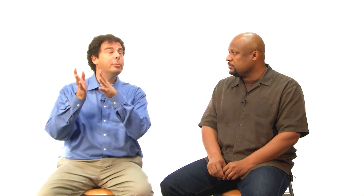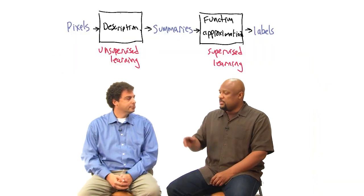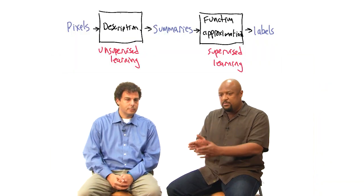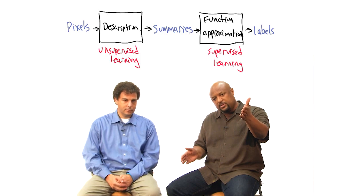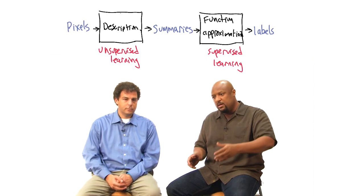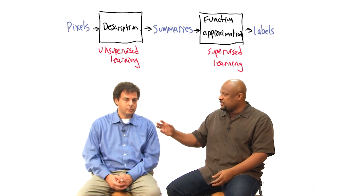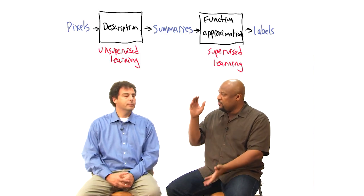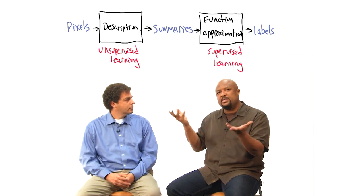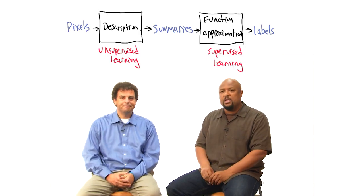But I could see ways that unsupervised learning could be helpful in the supervised setting. If I do get a nice description, and it's the right kind of description, it might help me do the function approximation better. So instead of taking pixels as input and then labels like male or female, I could take a summarization — like how much hair you have, your relative height to weight, and various things like that — that might help me do it.